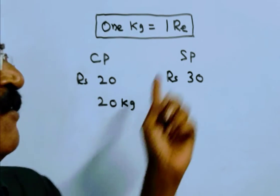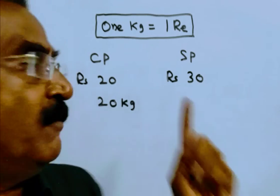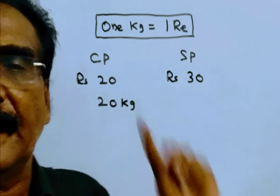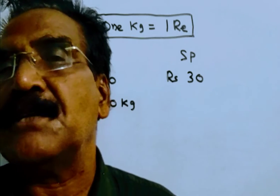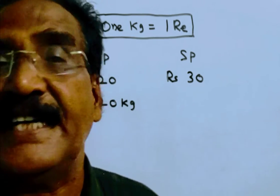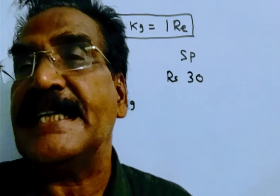He has to give 20 kg mangoes for rupees 30, but what he is doing is by using a false weight - he is using 800 grams for a kg.